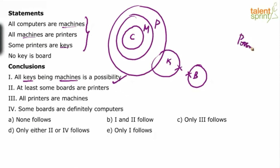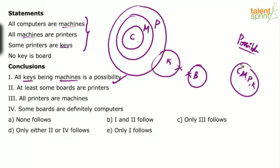Let me draw a possible diagram to show how all keys being machines is possible. All computers are machines — draw a single circle. All machines are printers, and some printers are keys can be drawn with keys in the same circle as a possible diagram. If you take this possible diagram, you find all keys are machines — both shown by the same circle.